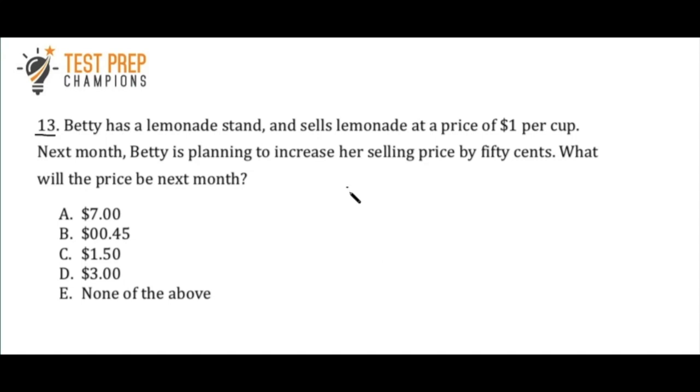Okay, so basically, if her selling price right now is $1 a cup, and next month she wants to increase it by 50 cents, what you would need to know is that 50 cents, to write that out in math terms, you would just say 0.5, and the answer is just $1.50, which is C.